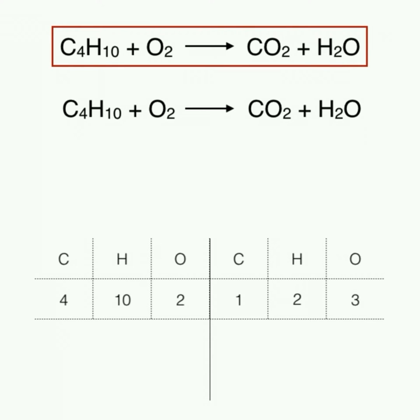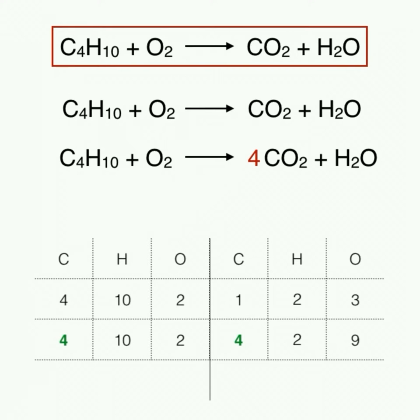Let's first balance the carbons. Adding a 4 in front of CO2 will now give us 4 carbons on the right side. Doing a second tally, we can see the carbons are now balanced, and we have also added more oxygens. There are now 9 oxygens amongst the products.